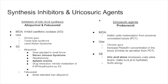The next class is uricosuric agents — drugs that make uric acid go into the urine. Probenecid inhibits urate reabsorption from the proximal convoluted tubule. The kidney normally secretes uric acid but reabsorbs it in the PCT; probenecid blocks that reabsorption, sending uric acid into the urine. It is used for chronic gout to increase uric acid excretion.